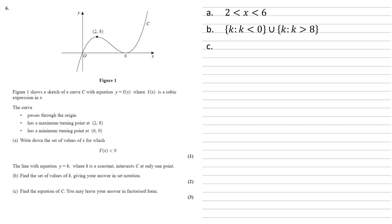For part C, we need to find the equation of C and we can leave our answer in factorised form. We know this is a cubic graph and we can see from the sketch the roots of this equation. We've got (0,0) and (6,0). So our roots are 0 for the first one and a repeated 6. It's repeated because it just touches the axis at this point, not going through it.